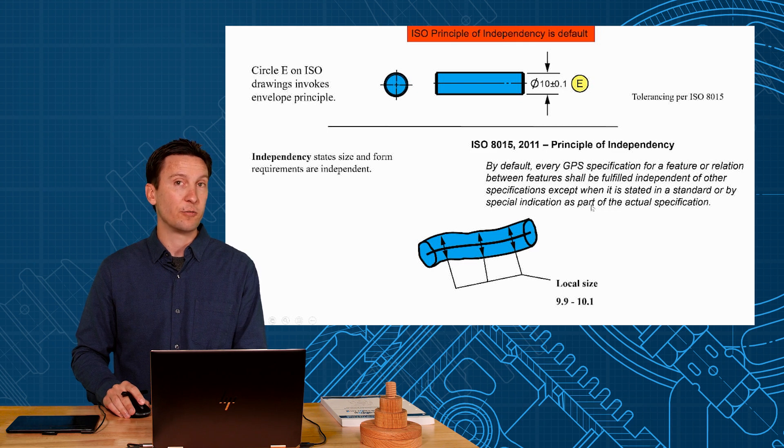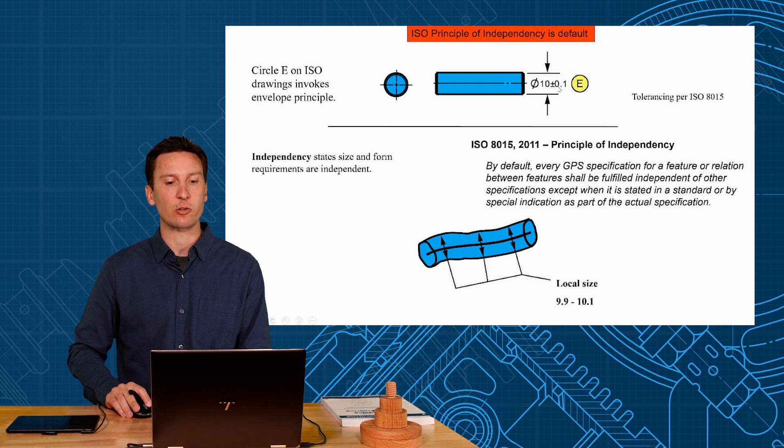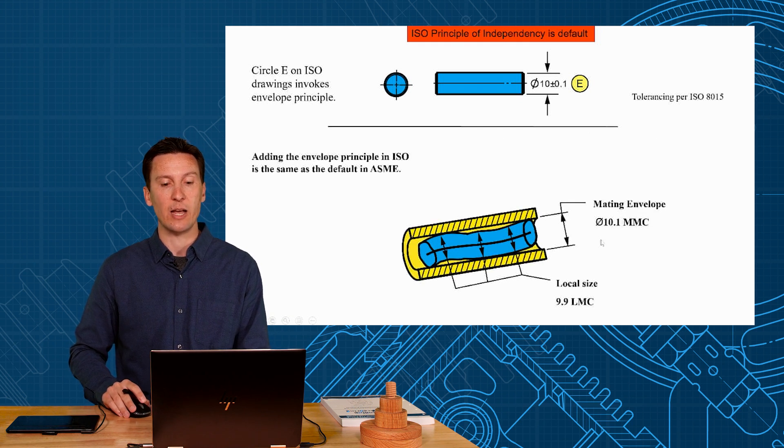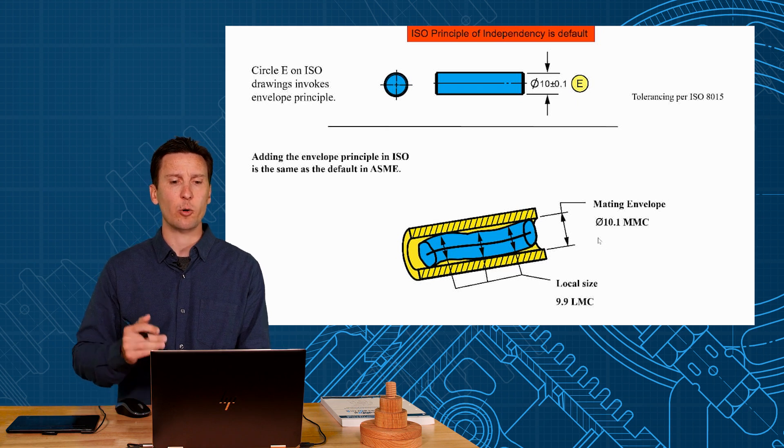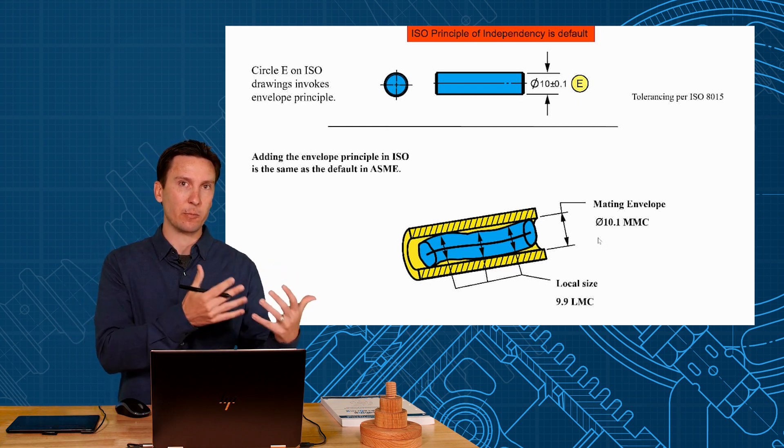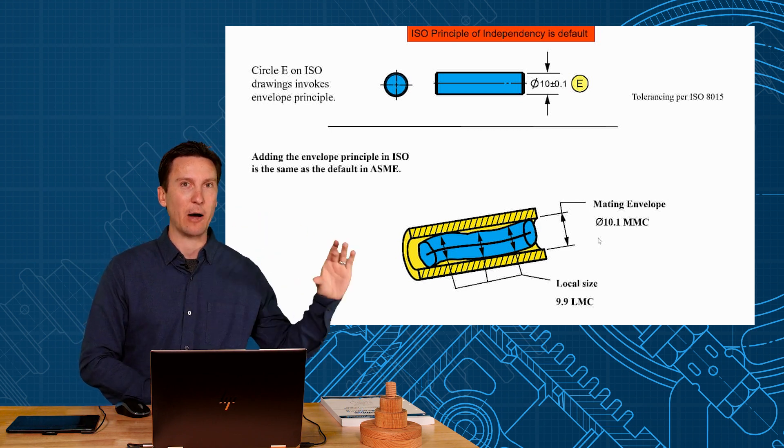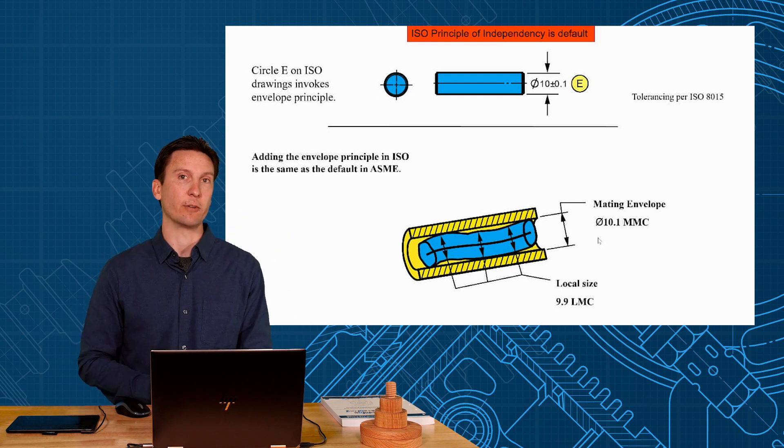Now if you want this to fit into a hole then you have to invoke the envelope principle. We do that by putting circle E next to your size tolerances and that gives you that extra mating envelope requirement. So by adding 10 plus minus 0.1 with the E then you get something similar to what we have in ASME with a mating envelope and a local size. Two requirements: size for local and an additional mating envelope.